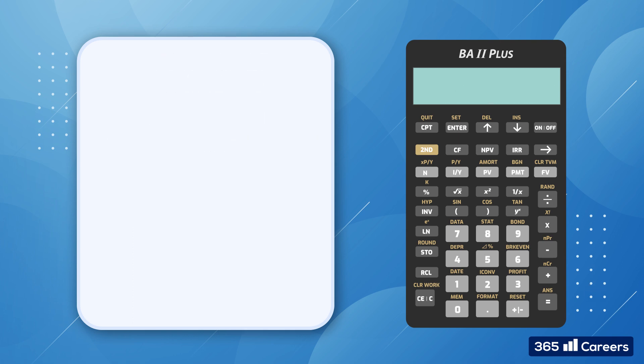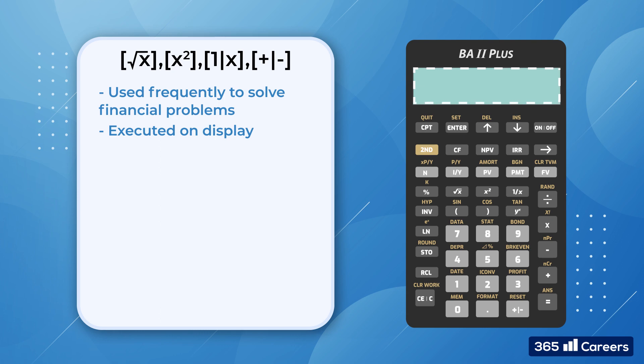Now let's examine these four operations: calculating the square root of x, x to the power of 2, 1 divided by x, and the plus-minus key. Firstly, we need to focus on these keys because you will need them very often when solving financial problems. The second reason is that the calculator executes these operations on display only. There is no need to press the equal sign at the end of the operation. The calculator simply executes the task after we press the key.